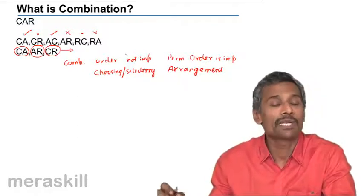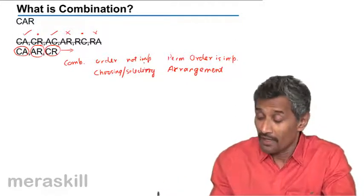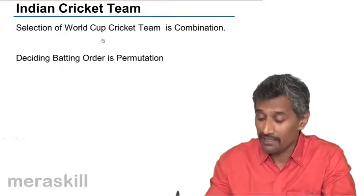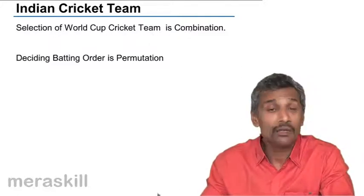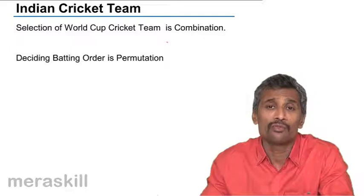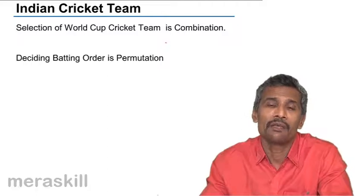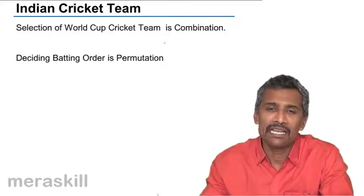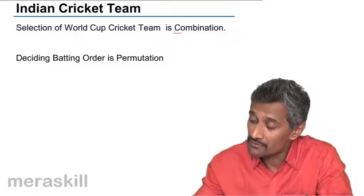A very simple example: selection of a World Cup cricket team is a combination. You are selecting a certain number of players. It's not important whom you selected first — whether you select A, B, C, D, E, F is the same as selecting B, C, D, E, F in a different order. So it is a clear-cut case of combination.